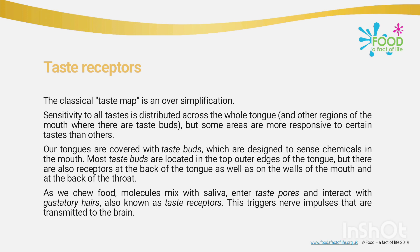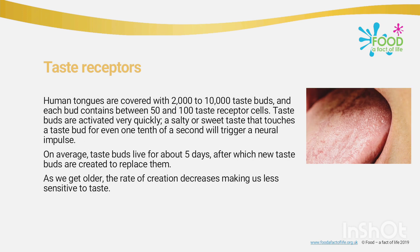Our tongue is covered with taste buds which are designed to sense chemicals in the mouth. Most taste buds are located on the top outer edges of the tongue, but there are also receptors at the back of the tongue, on the walls of the mouth, and at the back of the throat. As we chew, food molecules mix with saliva, enter taste pores, and interact with gustatory hairs — also known as taste receptors — triggering nerve impulses transmitted to the brain.